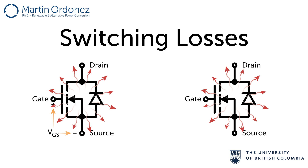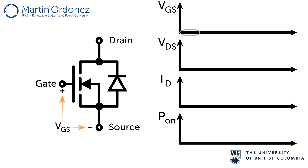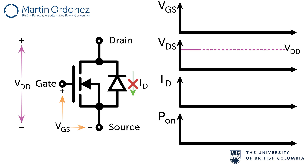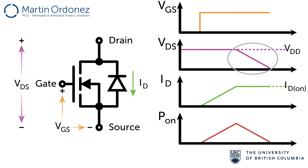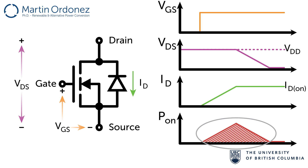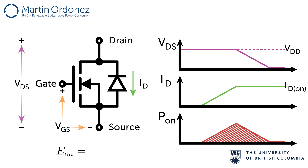Now let's move on to switching losses. When the MOSFET is off, VDS is zero — the voltage VDS between drain and source is the voltage being blocked by the device, VDD — and no current is flowing through the drain, so ID is zero, meaning the energy dissipated is zero. When the MOSFET is turned on, the current ID starts to rise, but the voltage VDS does not start to fall until the current has reached its final value. Then VDS starts to fall until it reaches its final value, which is close to zero. If we consider the instantaneous power during this transition, we see a triangular spike. The area beneath this spike represents the energy dissipated during turn-on, calculated as ID_on times VDD times the total transition time divided by 2.